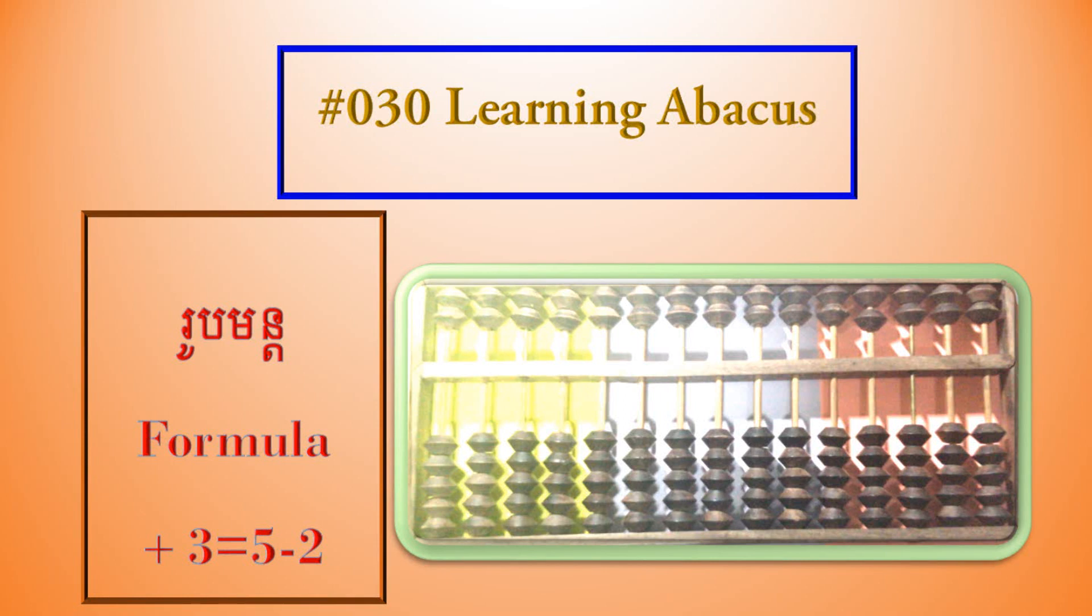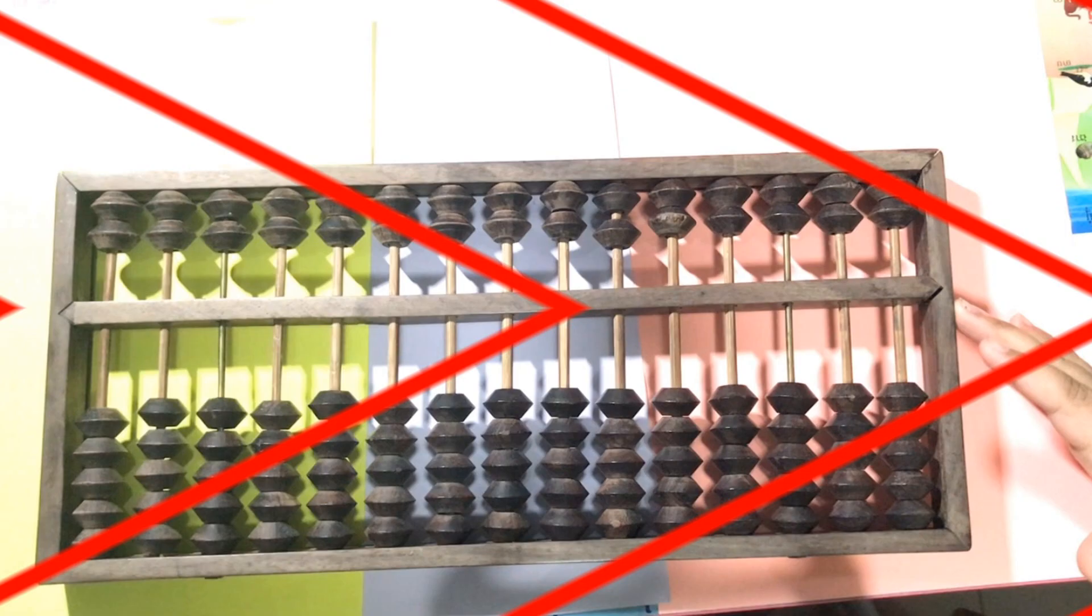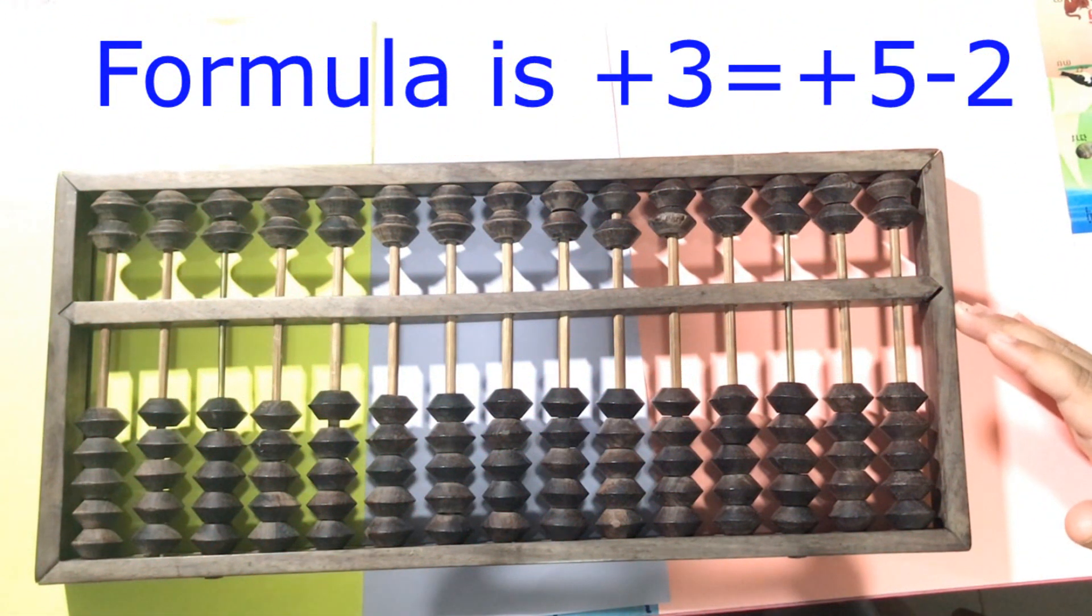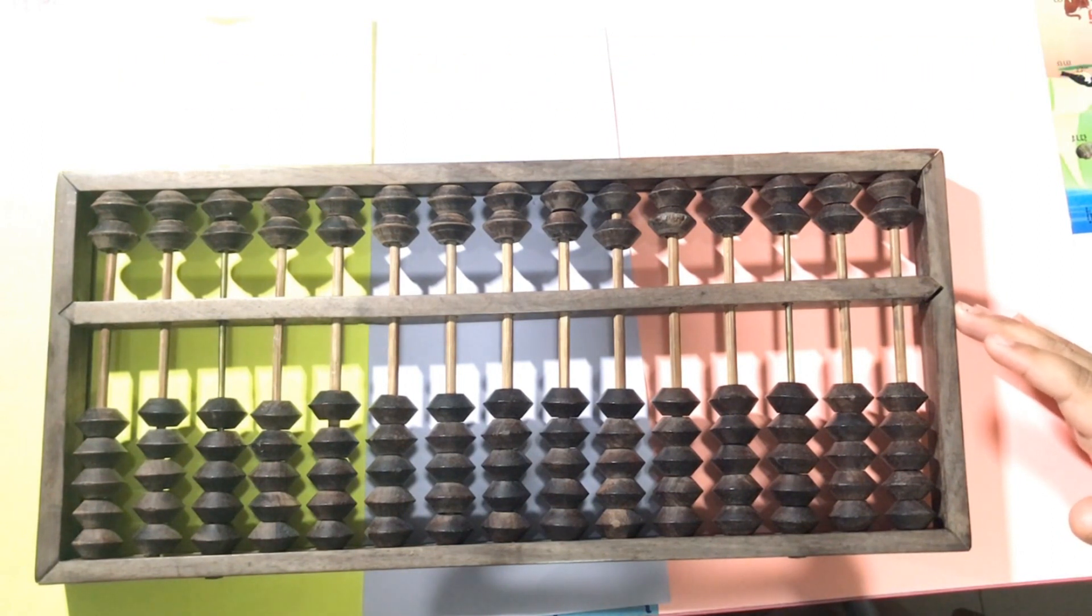Hello everyone. Today we study lesson 30. The formula is plus 3 equals plus 5 and minus 2.